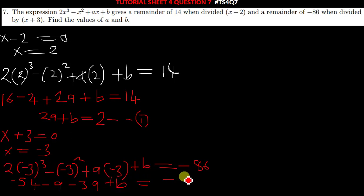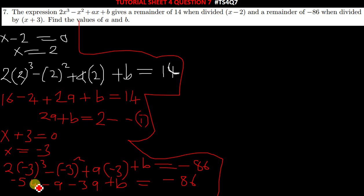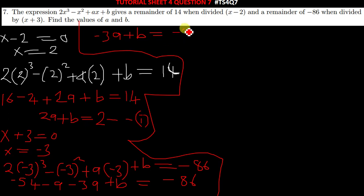Now simplify the expression. 3 to the power 3 is 27, and since 3 is negative it becomes negative 27, times 2 gives negative 54. Then negative 3 squared gives negative 9, and a times negative 3 gives negative 3a, plus b equals negative 86. Adding negative 54 and negative 9 gives negative 63. Taking negative 63 to the other side: negative 3a plus b equals negative 86 plus 63, which is negative 23. This is equation 2.